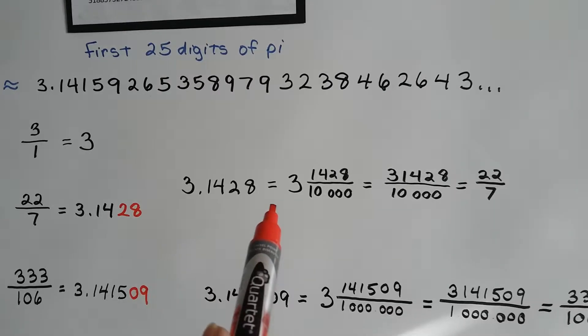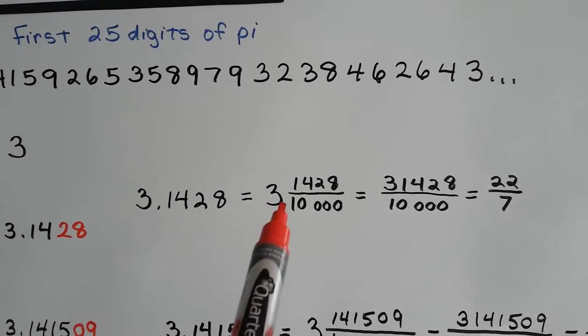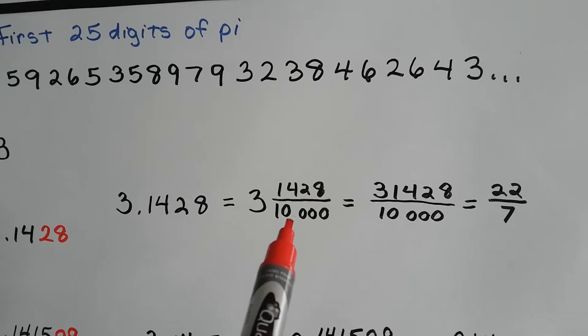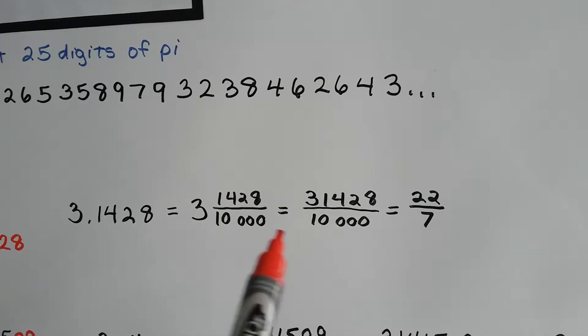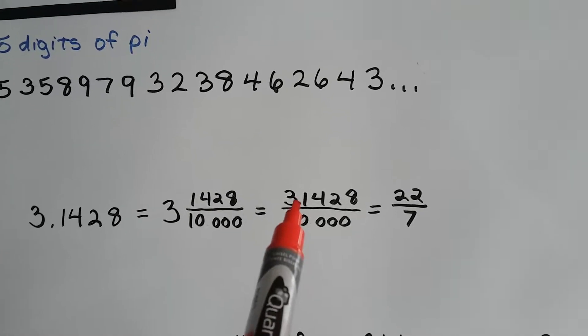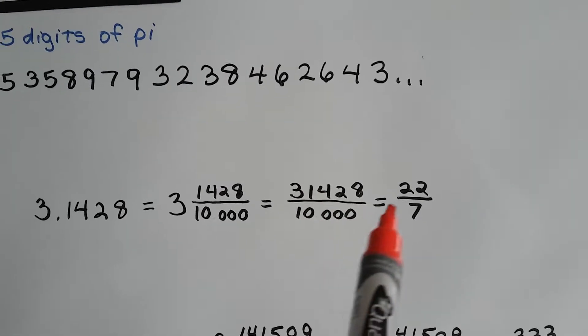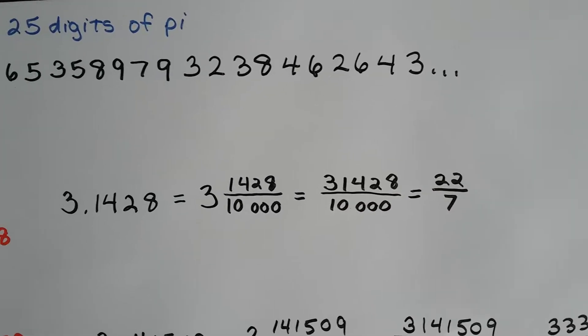3.1428 is really 3 and 1,428 ten-thousandths. If we put the 3 into the fraction, then we got 31,428 ten-thousandths. And, it would simplify to 22 over 7.